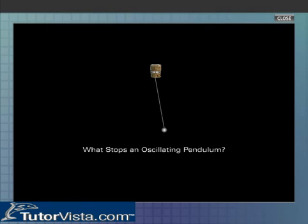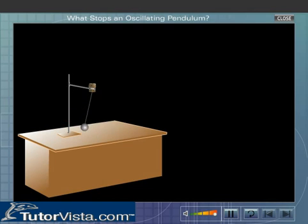What stops an oscillating pendulum? Observe the oscillating pendulum. We observe that the oscillations of the pendulum become smaller and smaller, and finally the pendulum stops. The pendulum stops oscillating due to the frictional resistance offered by the air as well as the support from where it is suspended.